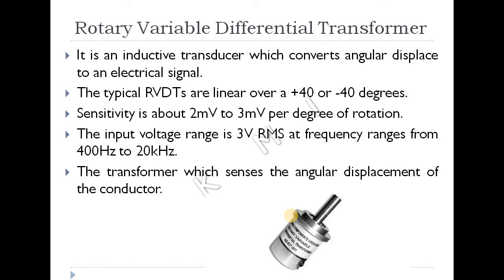RVDT measures angular displacement, while LVDT measures linear displacement. The difference in construction is that LVDT uses a cylindrical iron core, whereas RVDT uses a rotary ferromagnetic core — a rotating iron core — for angular displacement measurement.